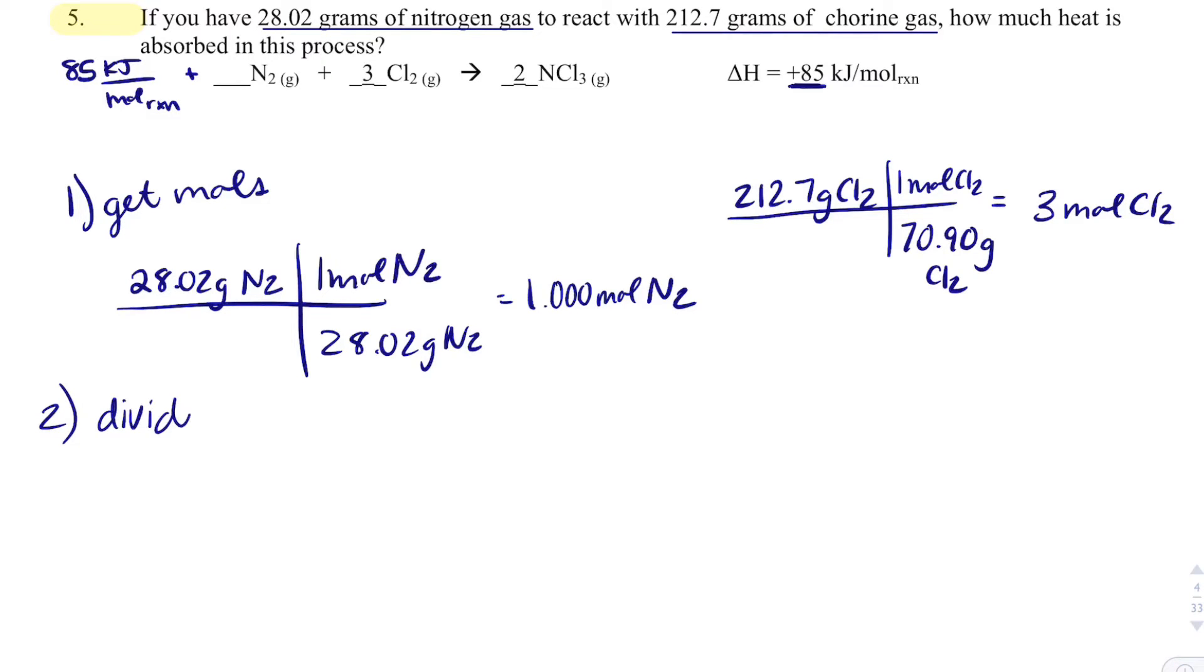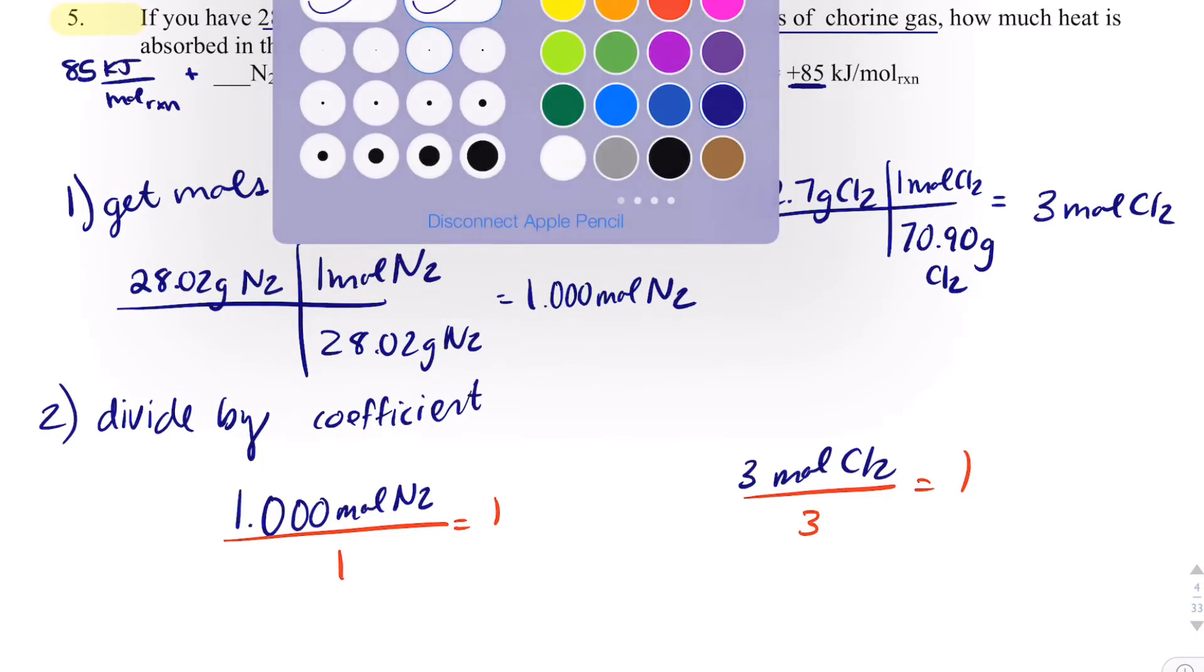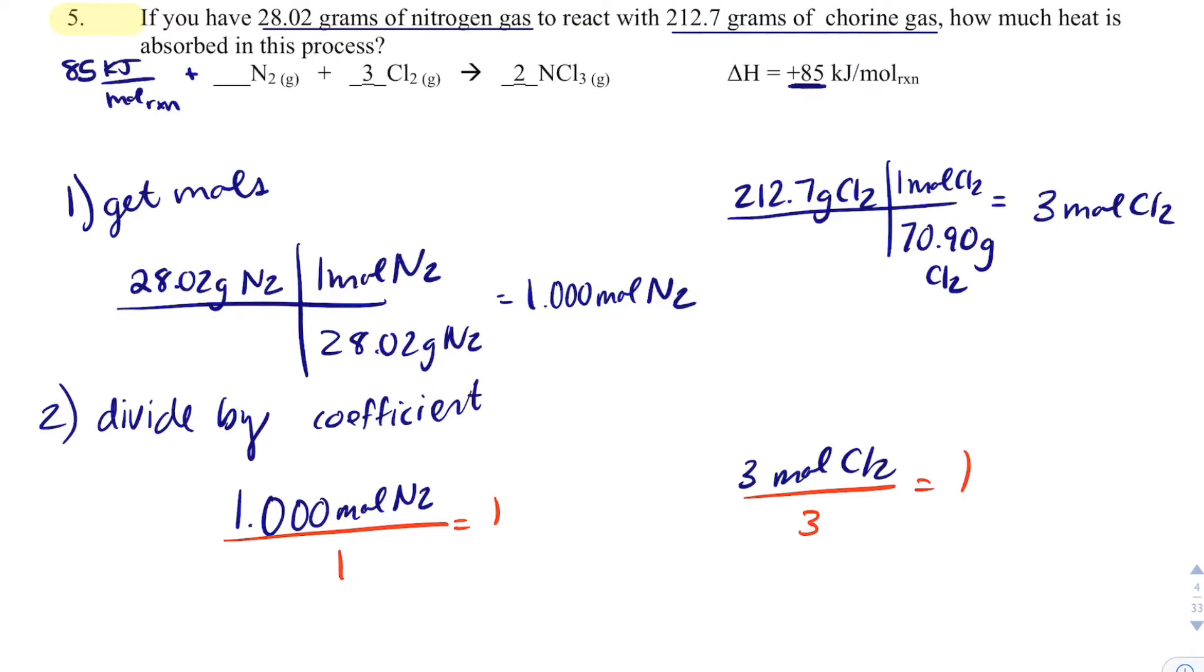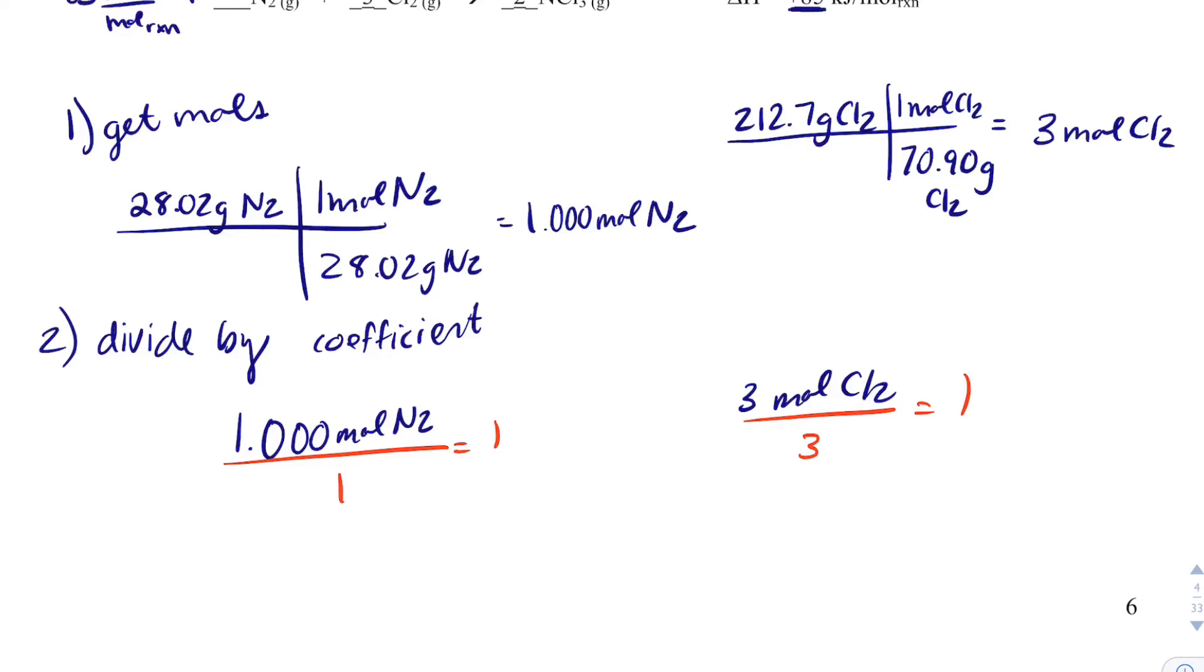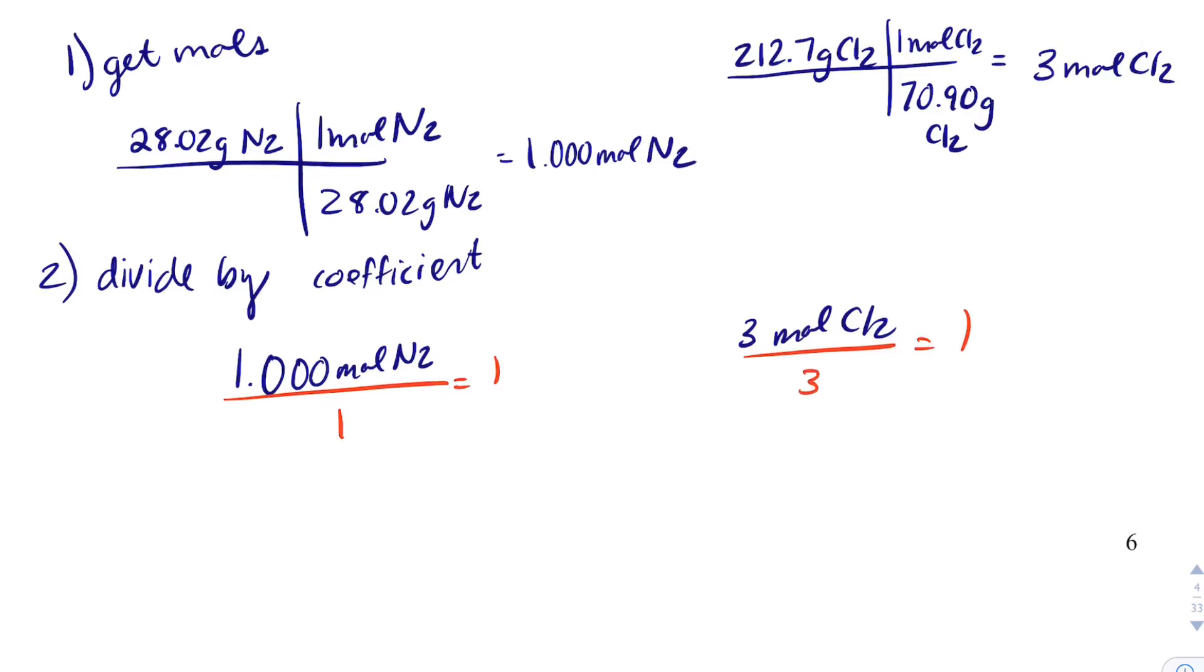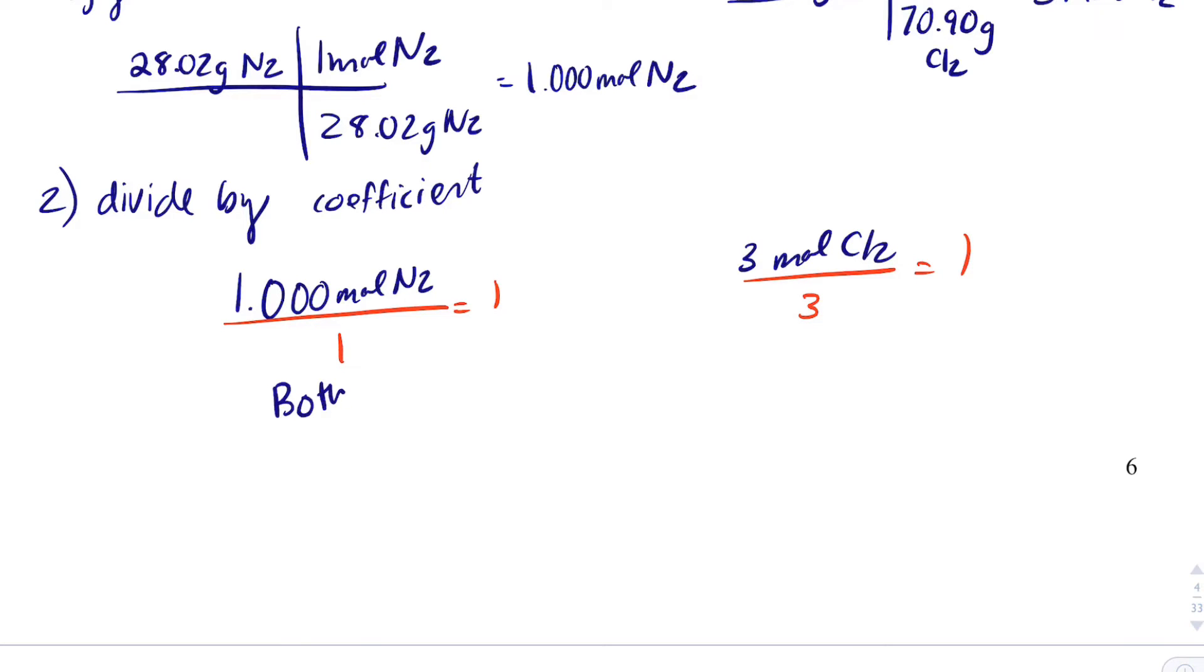The next step would be divide by their respective coefficients. Nitrogen would be 1.000 moles of N2, chlorine would be 3 moles of Cl2. Divide by 1, that equals 1. Divide by 3, that equals 1. Normally the lowest number we get would be our limiting reactant, but here they are actually the same. So this is a very strange situation, but actually both nitrogen and chlorine run out at the same time, so they're both limiting.